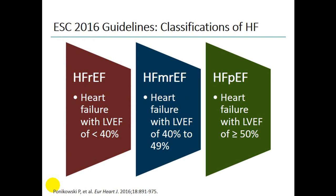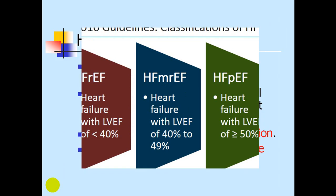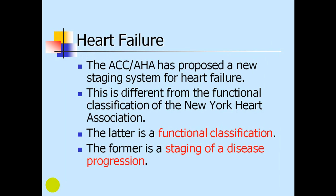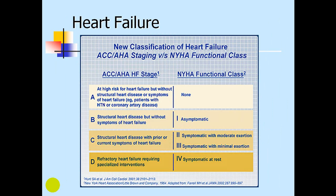There is a functional classification and an evolutional classification. The functional classification on the left of the screen is the New York Heart Association (NYHA) Class 1 to 4. Class 1 is asymptomatic; Class 2 has symptoms with moderate exertion; Class 3 has symptoms with minimal exertion; while Class 4 is symptomatic at rest.